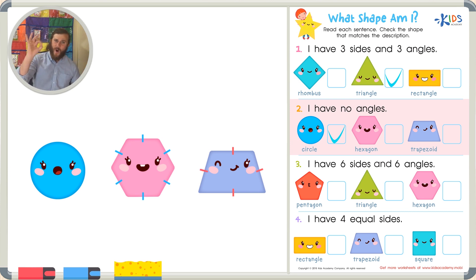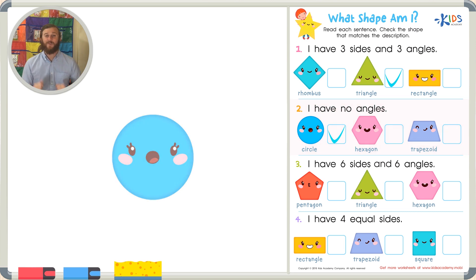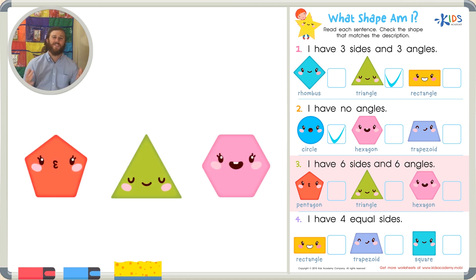Let's read the next description: I have six sides and six angles. Can you think of a shape that has six sides and six angles? I just mentioned it in our last example. I think I remember saying a hexagon, but let's draw a hexagon just to be sure. So as I draw my hexagon, I want to carefully count the sides. So let's count together: one, two, three, four, five, six. There are six sides in my hexagon.